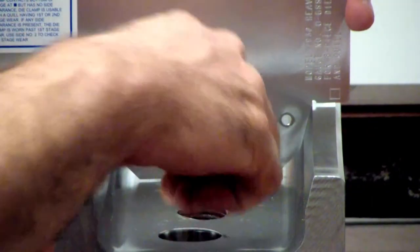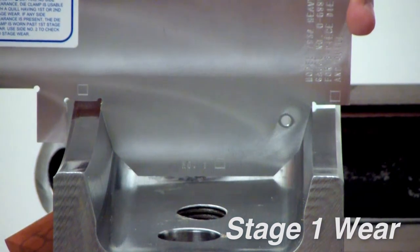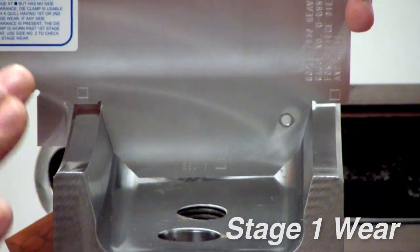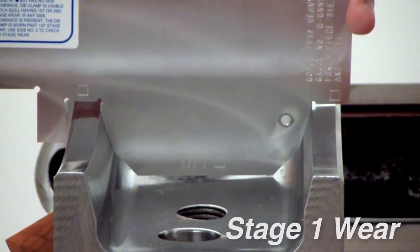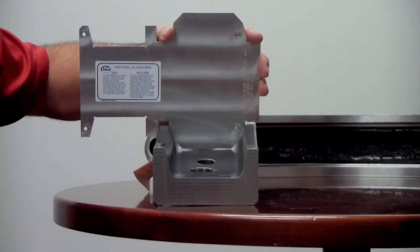If this clamp was at stage one, these three flat surfaces would be touching the corresponding surfaces on the clamp, and there would be no side-to-side movement. If the clamp was at stage one, it could be used with a quill flange that was also at stage one or stage two wear.